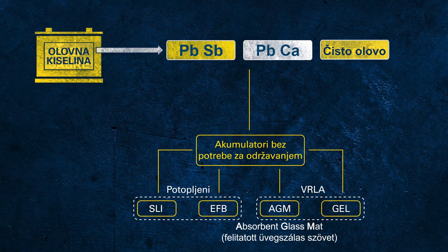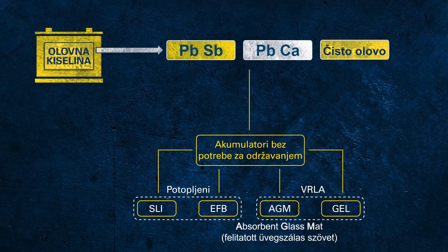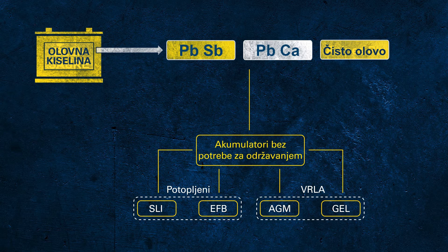AGM stands for absorbent glass mat, which indicates the main technological difference to a flooded battery. In this kind of battery, the electrolyte is no longer free but is fixed, absorbed in a glass mat separator. Each cell is sealed from the environment, and every cell is equipped with a separate valve to release potential overpressure. This construction provides higher performance and reliability than a flooded battery. In gel batteries, the electrolyte is not liquid but gel-like due to additives; these batteries also use the same VRLA function principle.